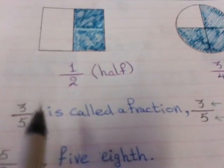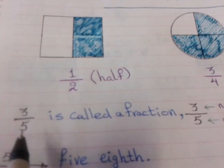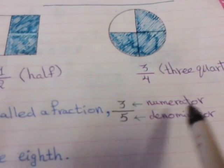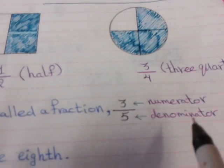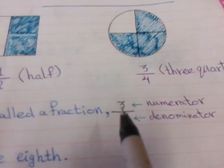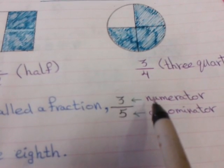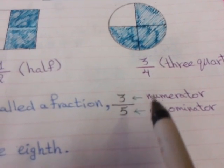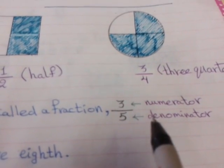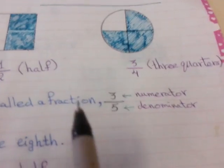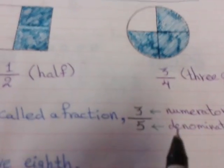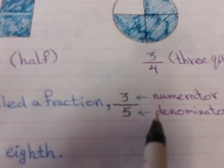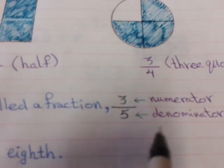Here we have 3 over 5. It's called a fraction. 3 is the numerator, 5 is the denominator. Numerator goes up, denominator goes down. We can remember: denominator down, D for down.